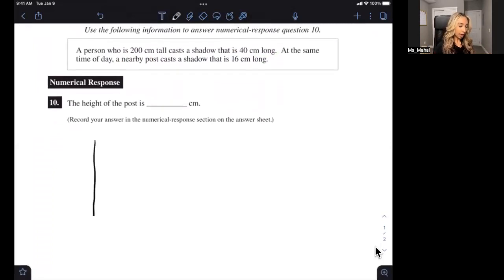So here's our person, and they're going to be 200 centimeters tall, and they're casting a shadow. That means there's some source of light behind them, behind the person, and of course, the post as well. So that shadow is going to be 40 centimeters long. Okay, so that's that. This is the person.